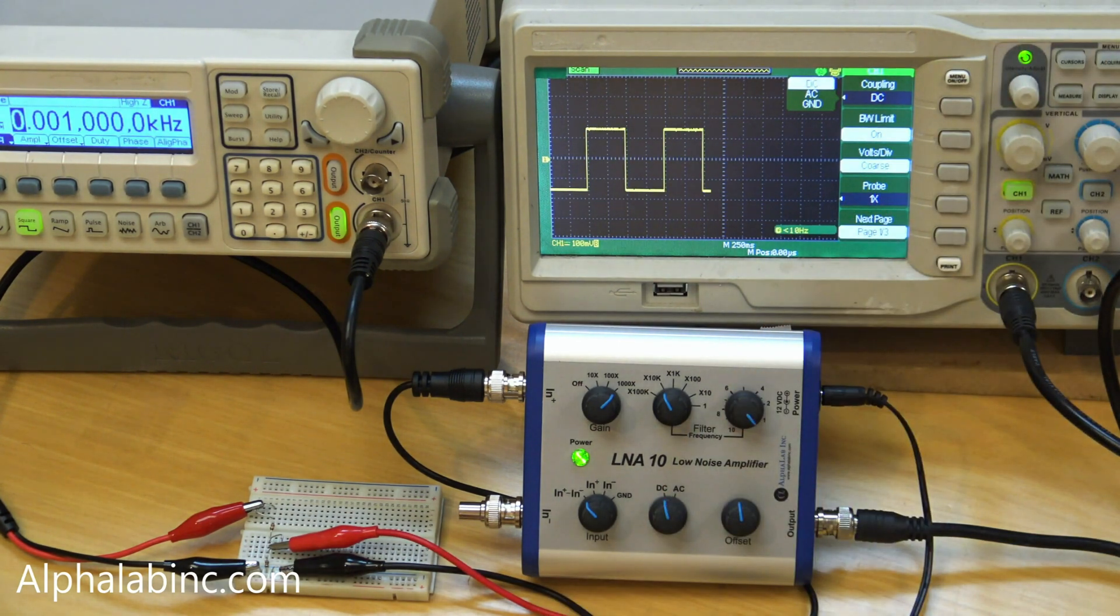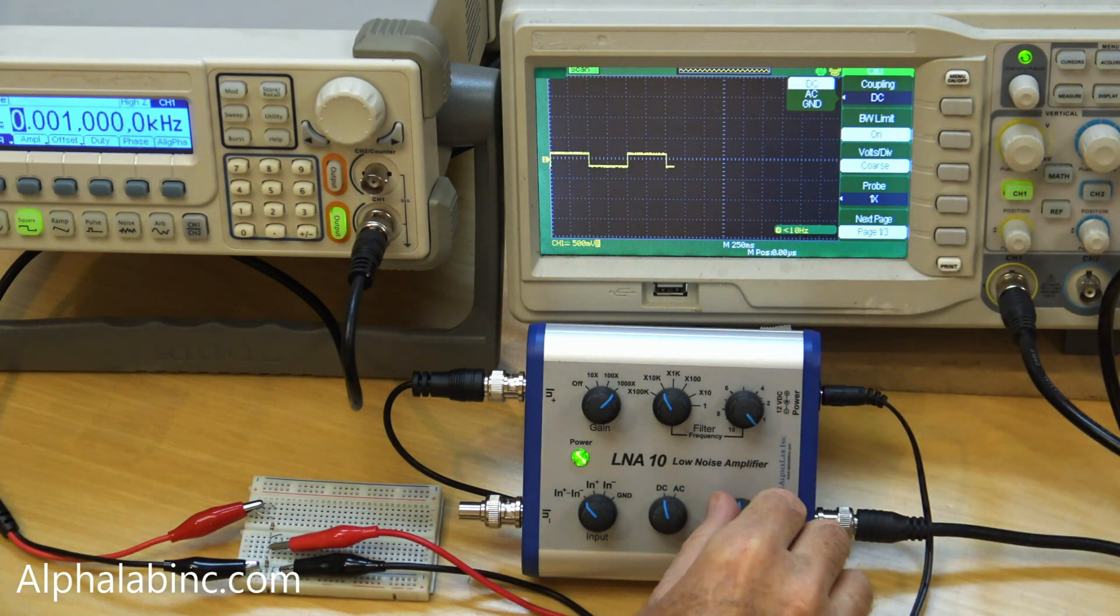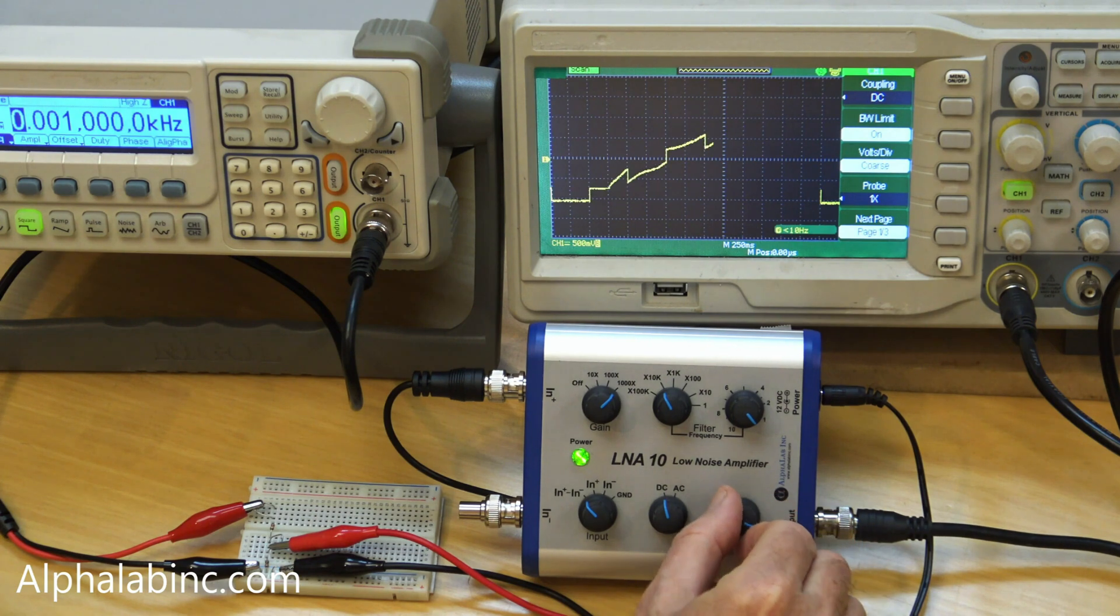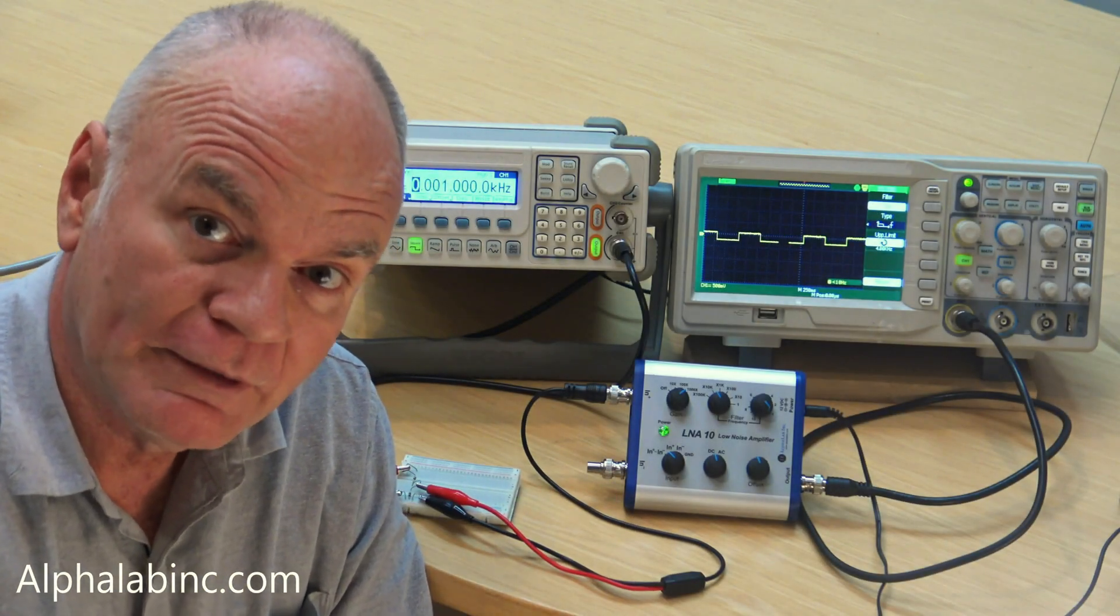The offset, as referenced to the input, is adjustable from minus one millivolt to plus one millivolt. The LNA10 is available now, made by AlphaLab. Its price is a tenth of the typical price of low-noise differential probes.